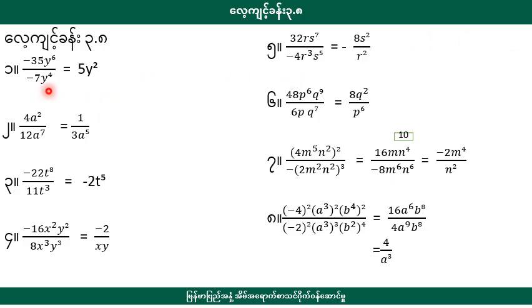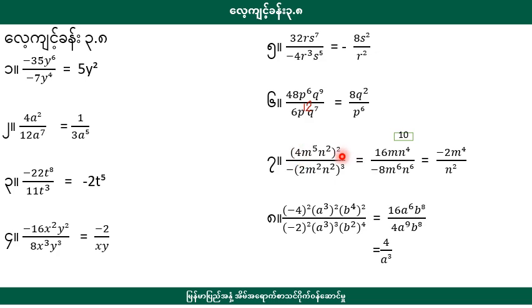3.8, 4.8, 4.8, 5.8, 6.8, 7.8, 8.8, 9.8, 10.8, 10.19, 11.19, 21.19. This is 4m to the power of 5. n2 to the square. Minus 2m2 to the square. Then you can see the second half of the square.